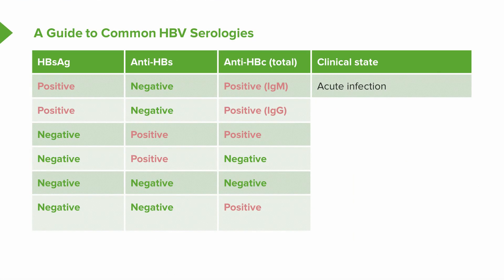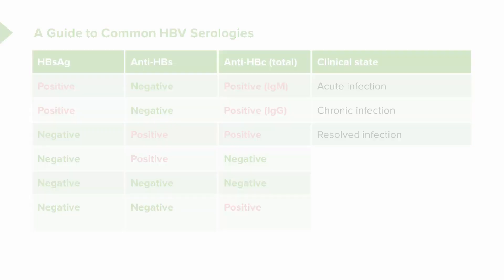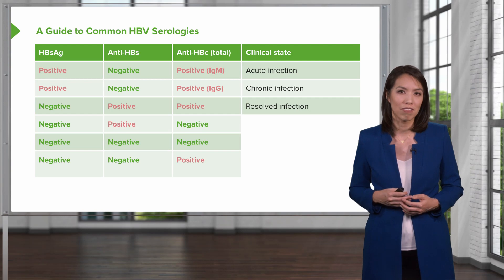The first scenario is a positive surface antigen with a positive IgG core antibody, indicating acute infection, since the only way to have a positive surface antigen is to be exposed to the virus. If you have a positive surface antigen with a positive IgG core antibody over time, this means you have progressed to the chronic state. The next scenario is a negative surface antigen with a positive surface antibody and a positive core antibody — this indicates a resolved infection, as the person has been infected and built up immunity.